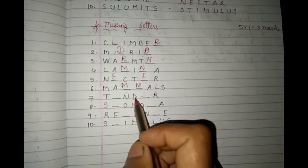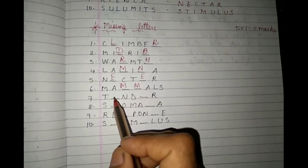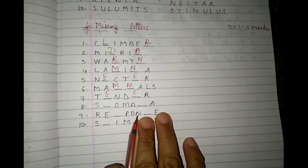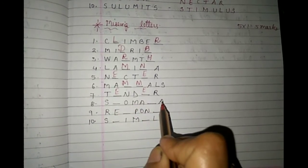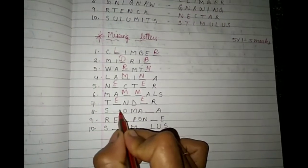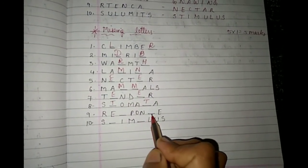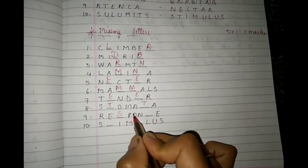Seventh one: T-dash-N-D-dash-R. Here also, the same alphabet will go in both blanks: T-E-N-D-E-R. Eighth one: S-dash-O-M-A-dash-A. Here also the same letter in both blanks: S-T-O-M-A-T-A — stomata. Ninth one: R-E-dash-P-O-N-dash-E. Answer: R-E-S-P-O-N-S-E — response. Notice that from the fifth to the ninth question, the same letter appeared in both blanks — but that is not always the rule.